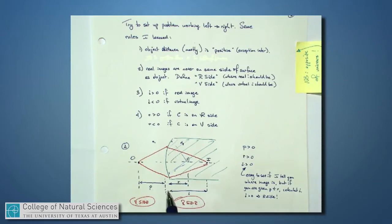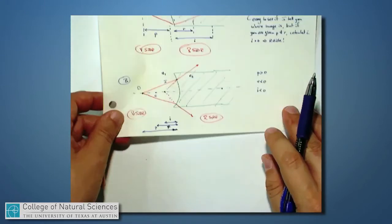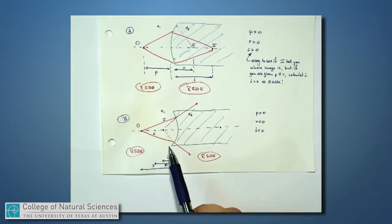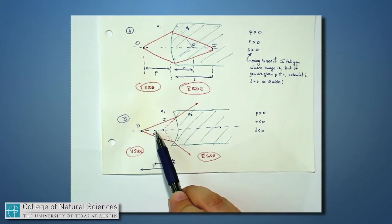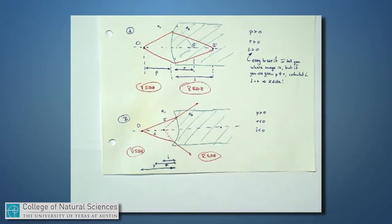And if the center of curvature is over on the left side, like in this picture here, now the center of curvature is over here, and so the radius in this case is a negative number.